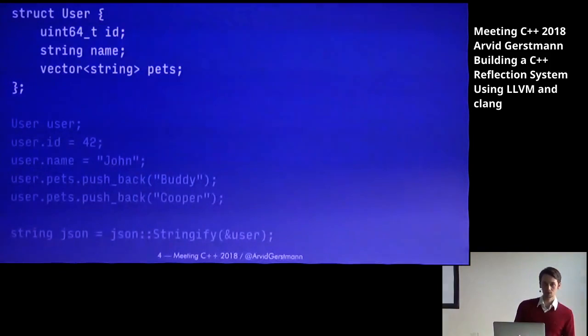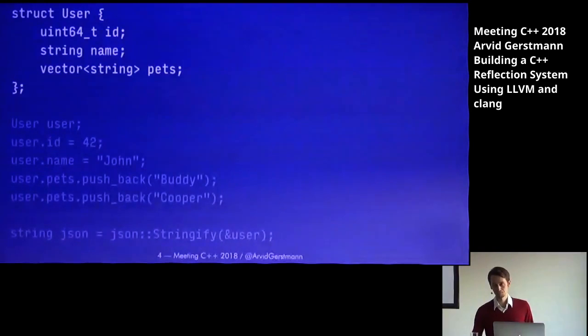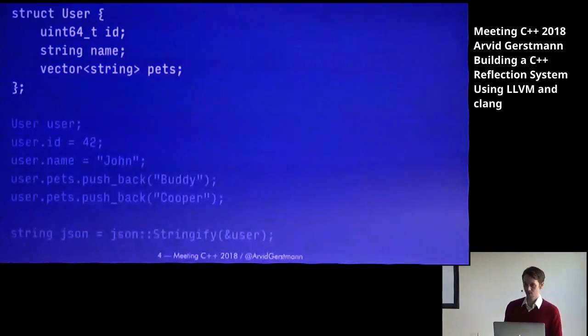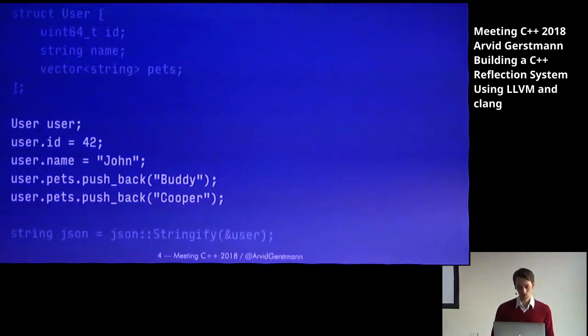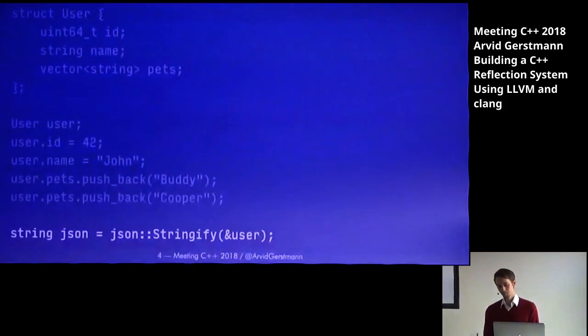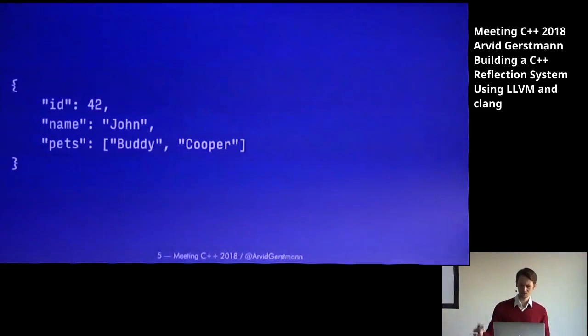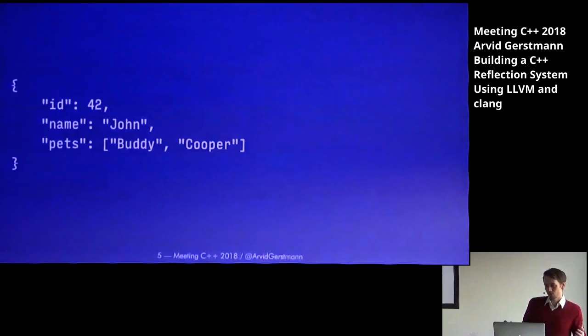Here's a little code snippet. We have a struct called user. User has three members: an id, which is a uint64; a name, which is a string; and then a vector of strings called pets. We fill the structure with some data — we give him the id of 42, we call him John, and give him his two cute pets, his dogs Buddy and Cooper. And we call a function called JSONStringify, which returns a totally standard JSON string. It's a normal standard JSON object — we can pass it around, send it over the network, serialize it to disk, deserialize it, and do a lot of things you'd normally do with a JSON object.